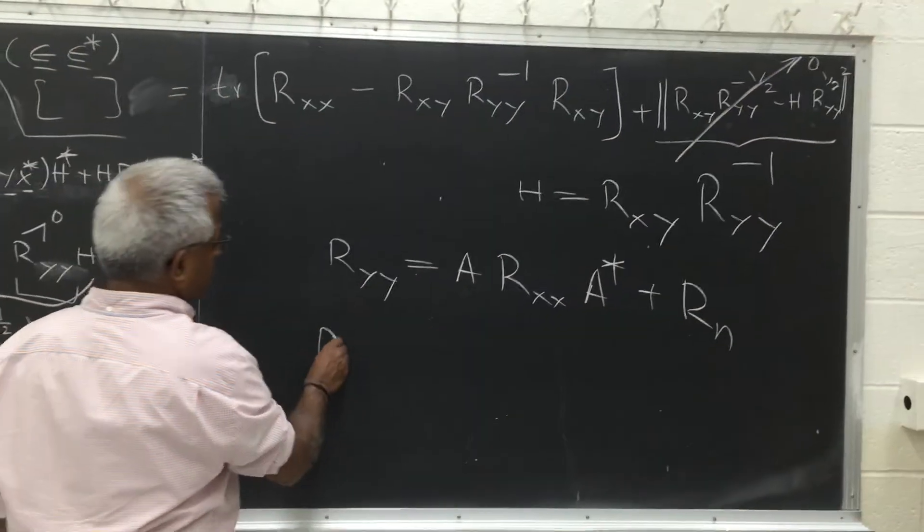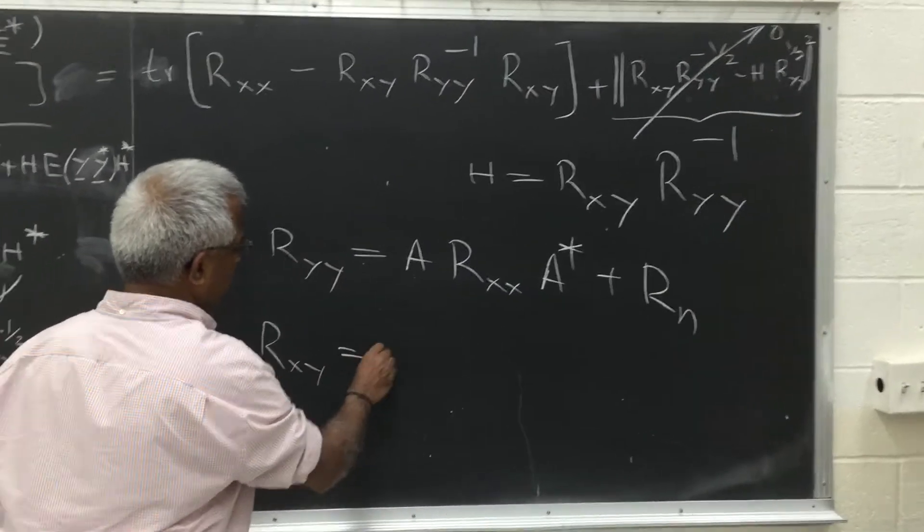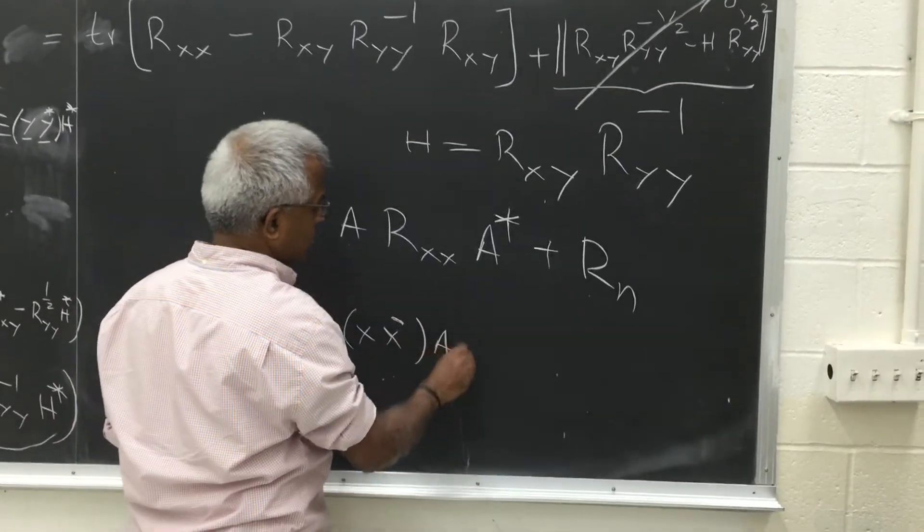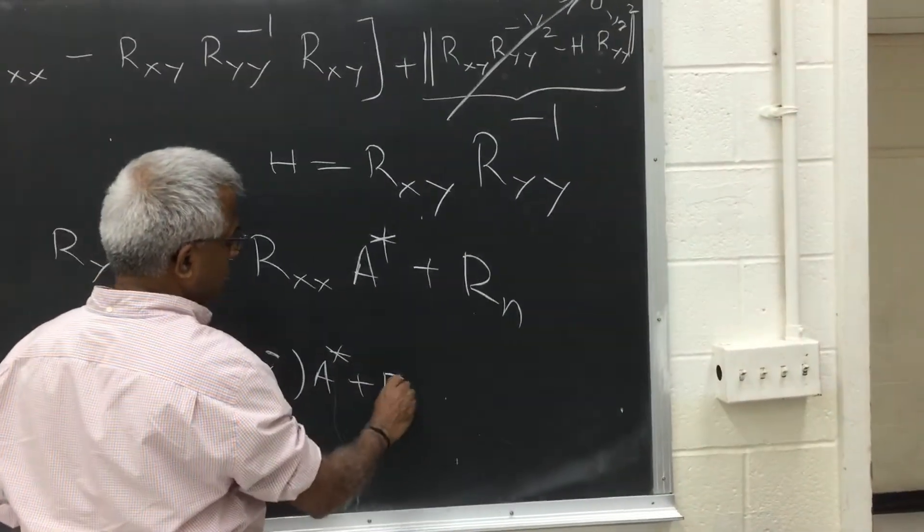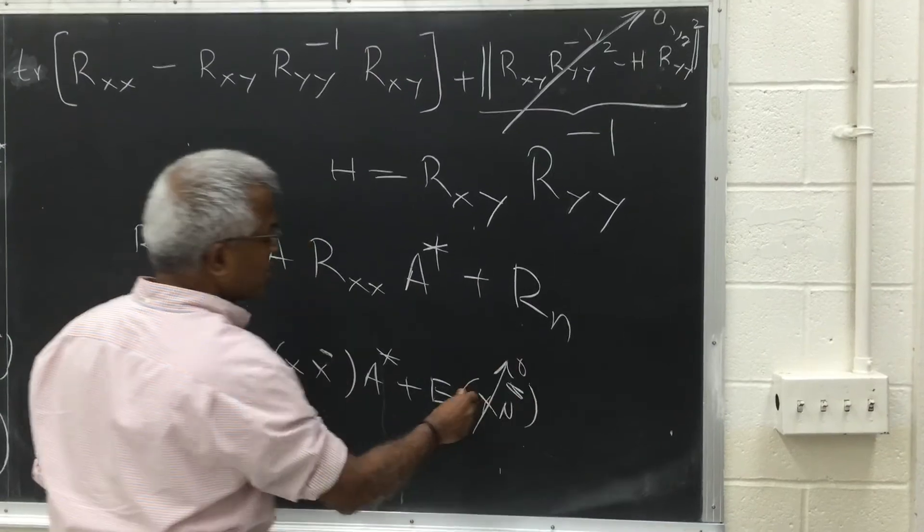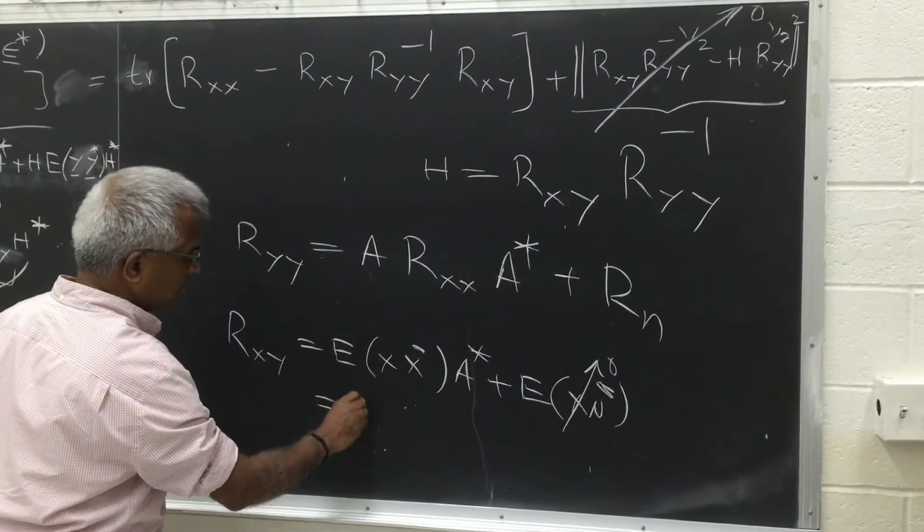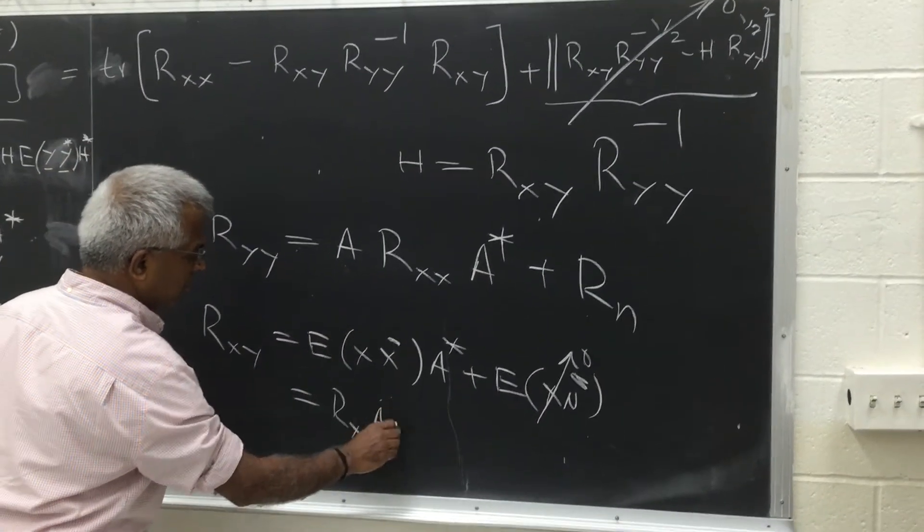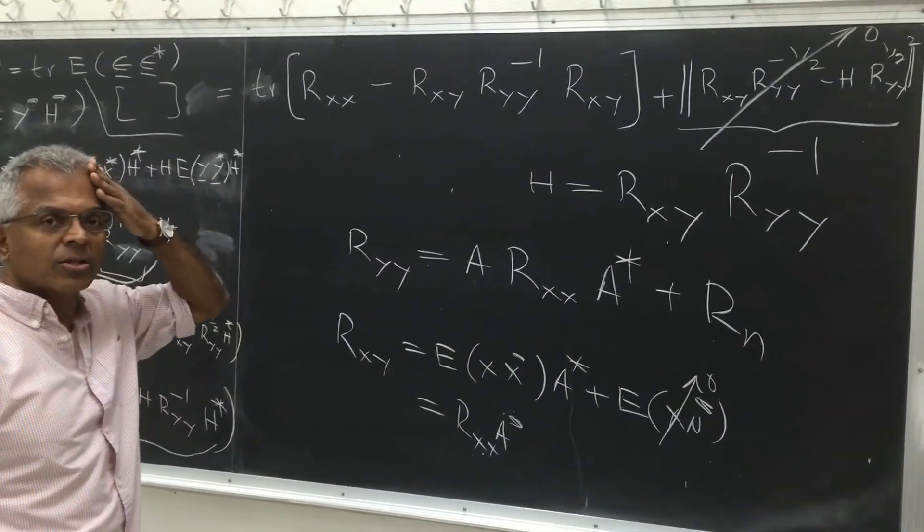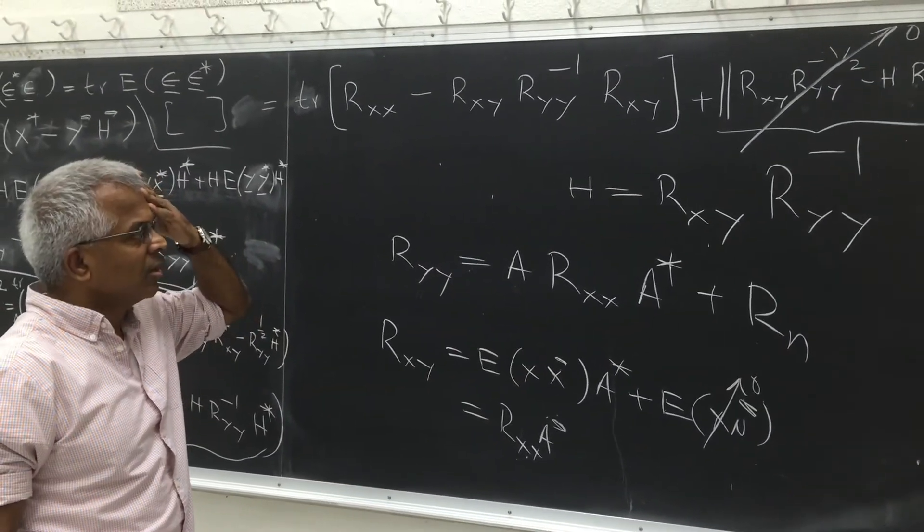And Rxy, for example, is expected value of X, X transpose, A transpose, plus expected value of X, N transpose. So again we assume signal and noise are uncorrelated, so this is Rxx, A transpose. So you can substitute this into this, and get the best values for h, the optimum linear estimate.